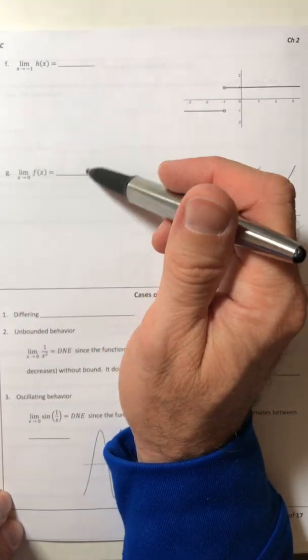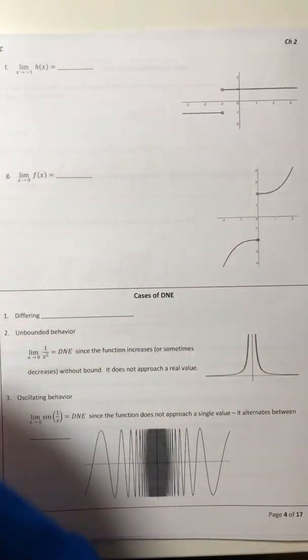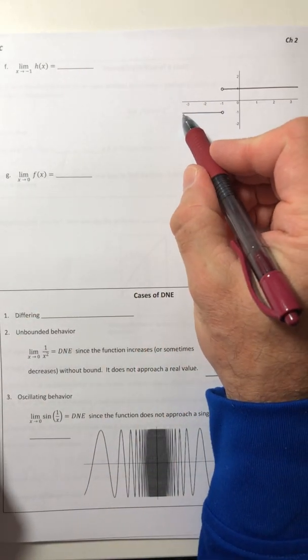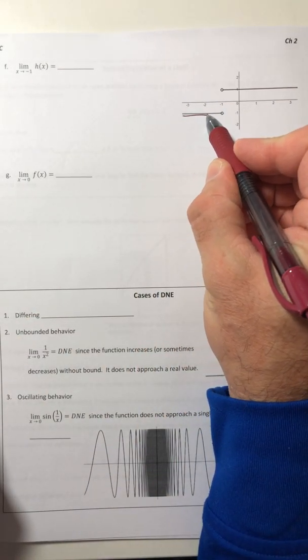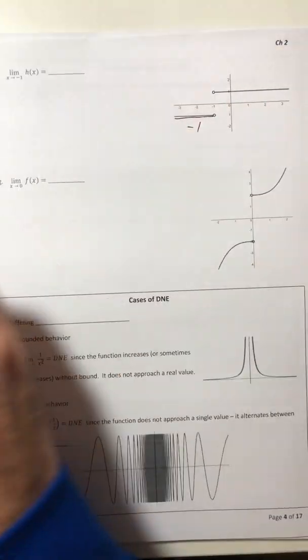All right, let's look at these next two examples with evaluating a limit with these graphs. So as X approaches negative 1, the Y value, it looks like it's approaching, is also negative 1.